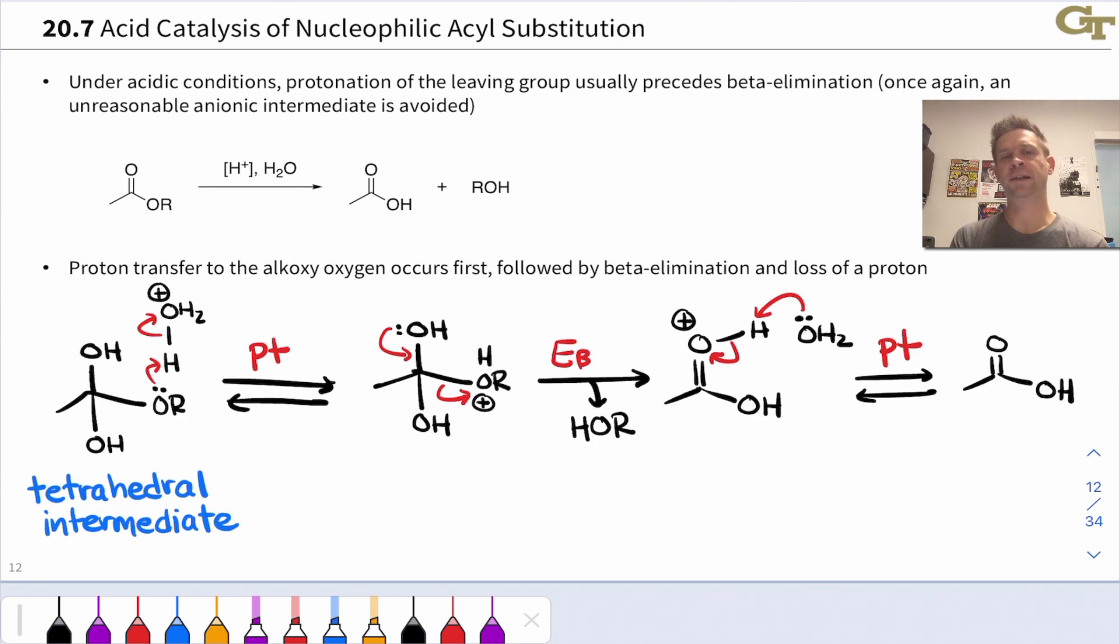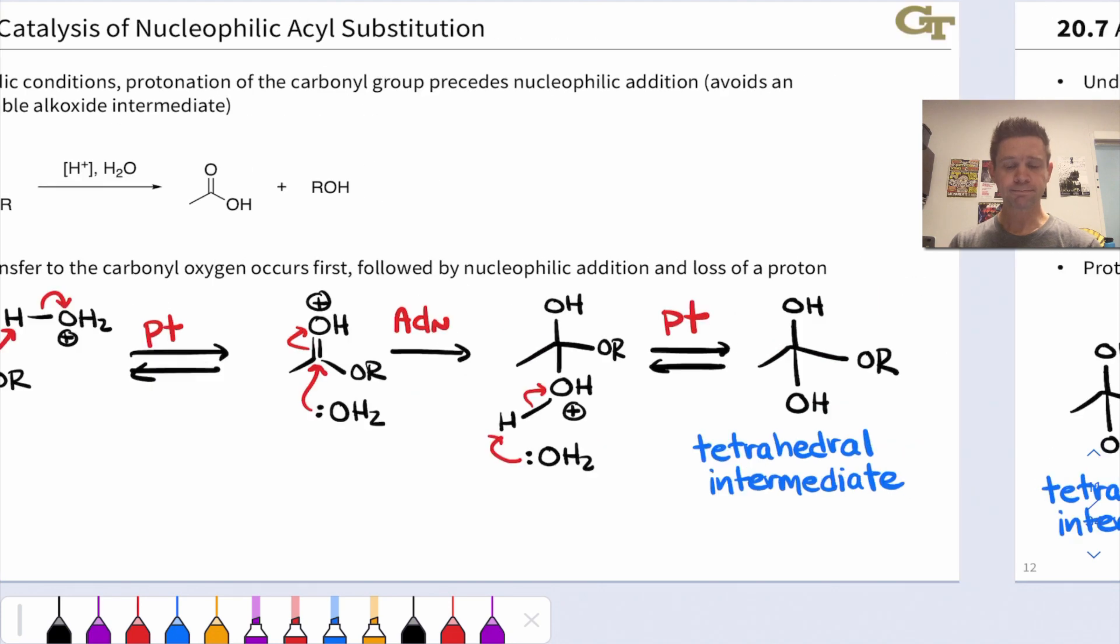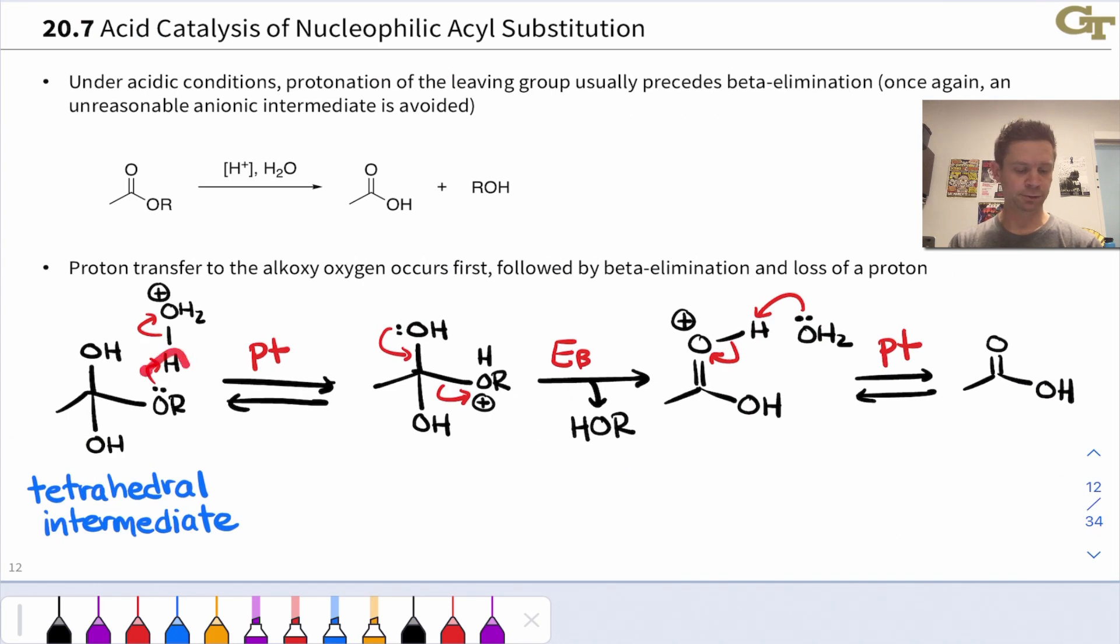So this shows how nucleophilic acyl substitution can be catalyzed by acid via positively charged reactive intermediates, protonating the carbonyl oxygen. That's very common. That allows the nucleophile to add in, and the nucleophilic atom becomes positively charged, and then removal of a proton from that nucleophilic atom generates a neutral tetrahedral intermediate. And then we protonate the leaving group atom. Here it's O, the O in OR, that facilitates beta elimination. And then a final proton transfer regenerates the catalyst and gives the neutral product.